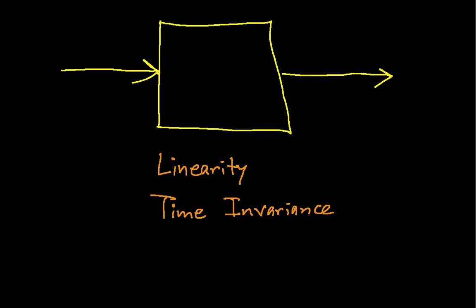Okay, so this is the second in the system properties overview videos. As you can see, we've drawn a system that has an input and an output, and then we've conveniently described the two properties that we're going to talk about: linearity and time invariance.